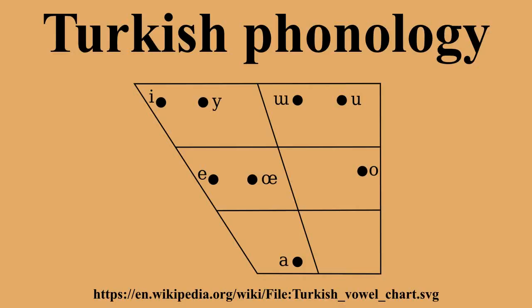A notable feature of Turkish phonology is a system of vowel harmony that causes vowels in most words to be either front or back and either rounded or unrounded. Stop consonants have palatal allophones before front vowels and velar allophones before back vowels.